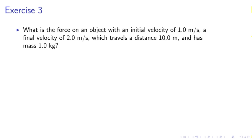Exercise 3. What is the force on an object with an initial velocity of 1 meter per second, final velocity of 2 meters per second, which travels a distance of 10 meters and has a mass of 1.0 kilogram?